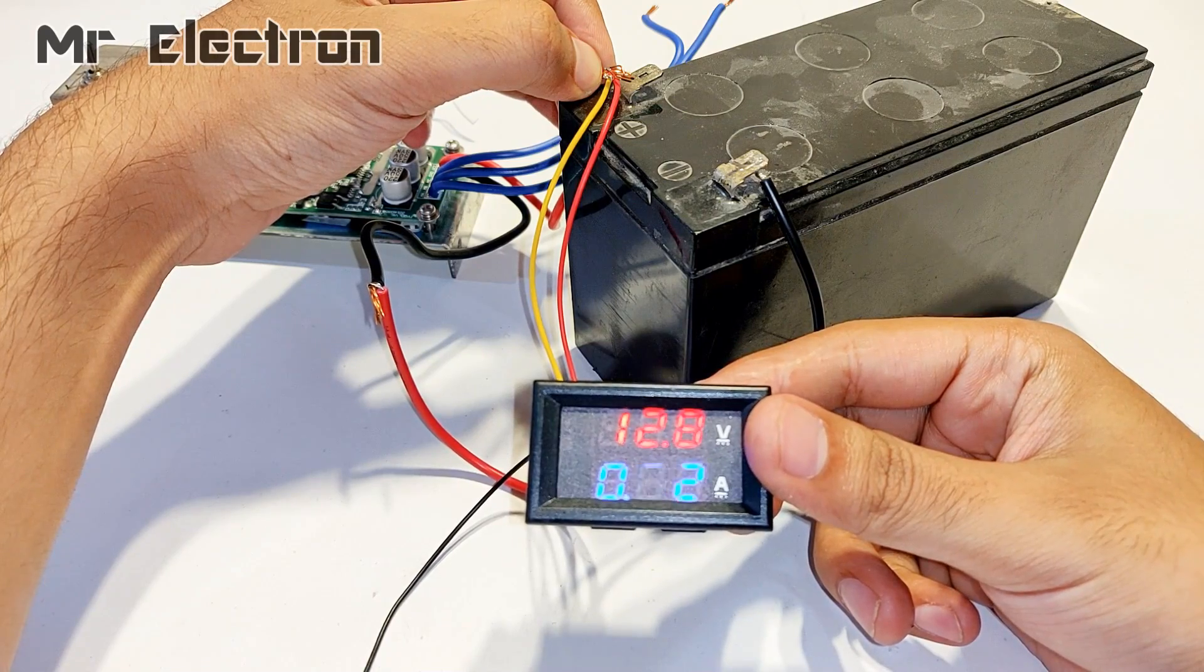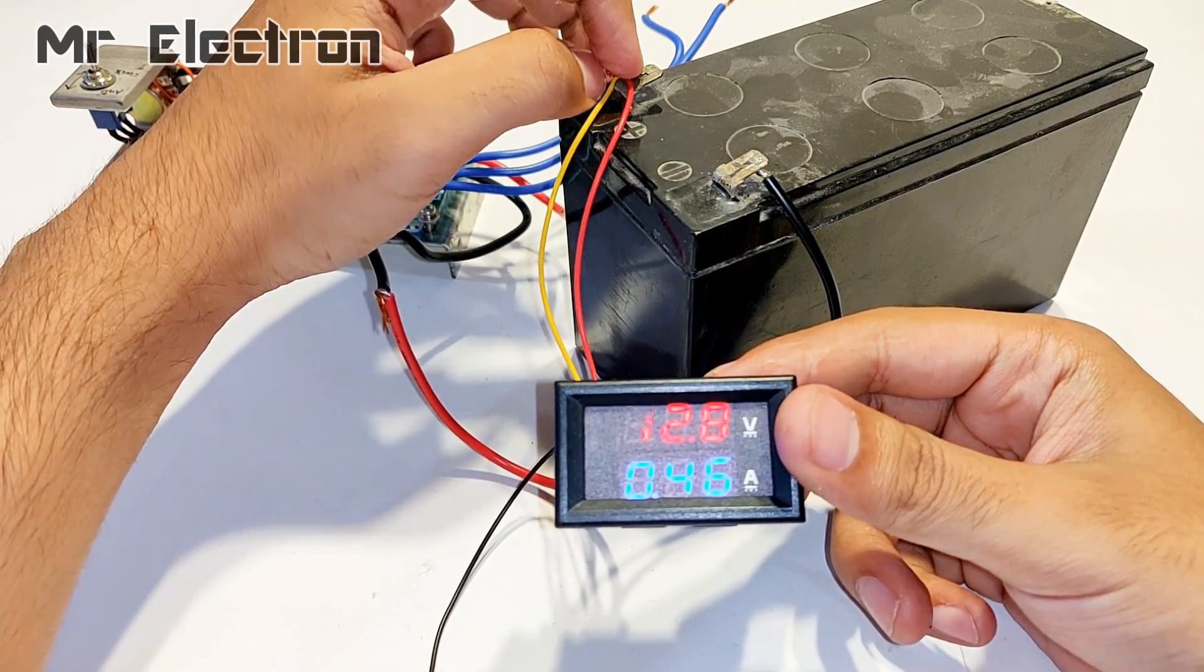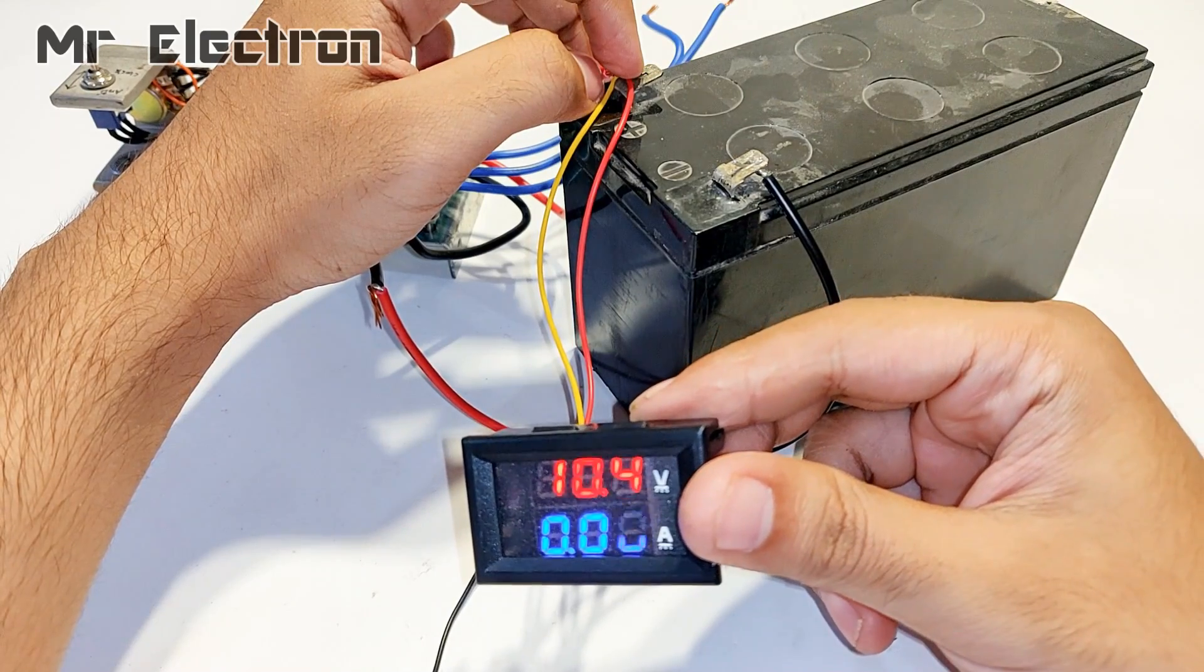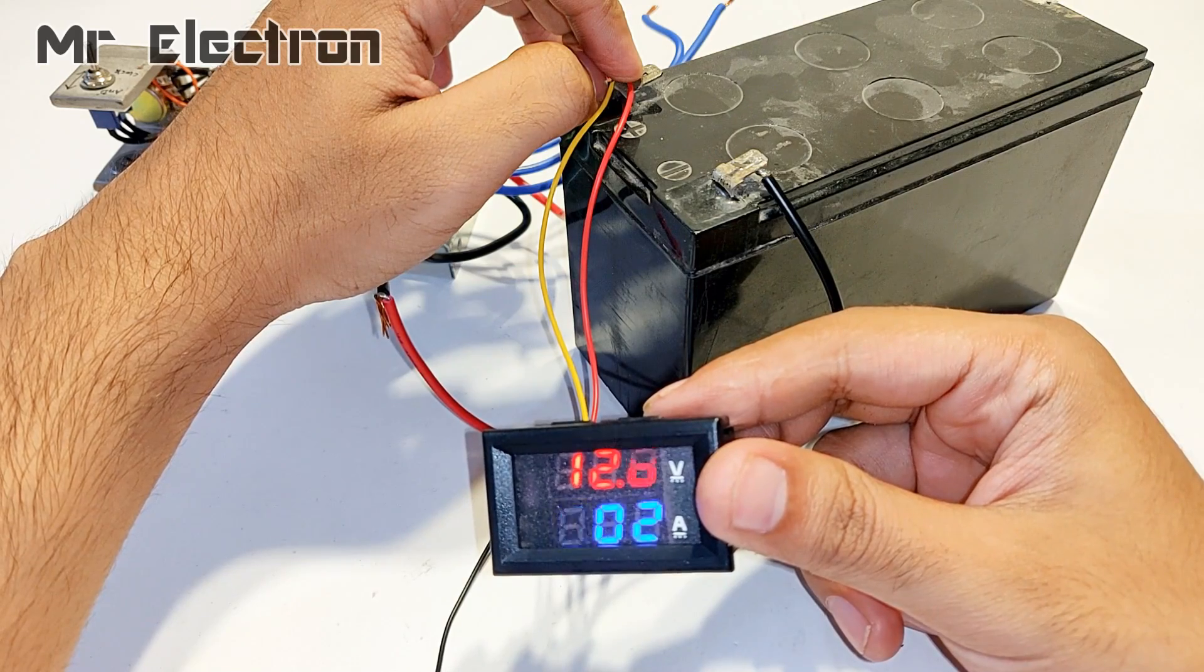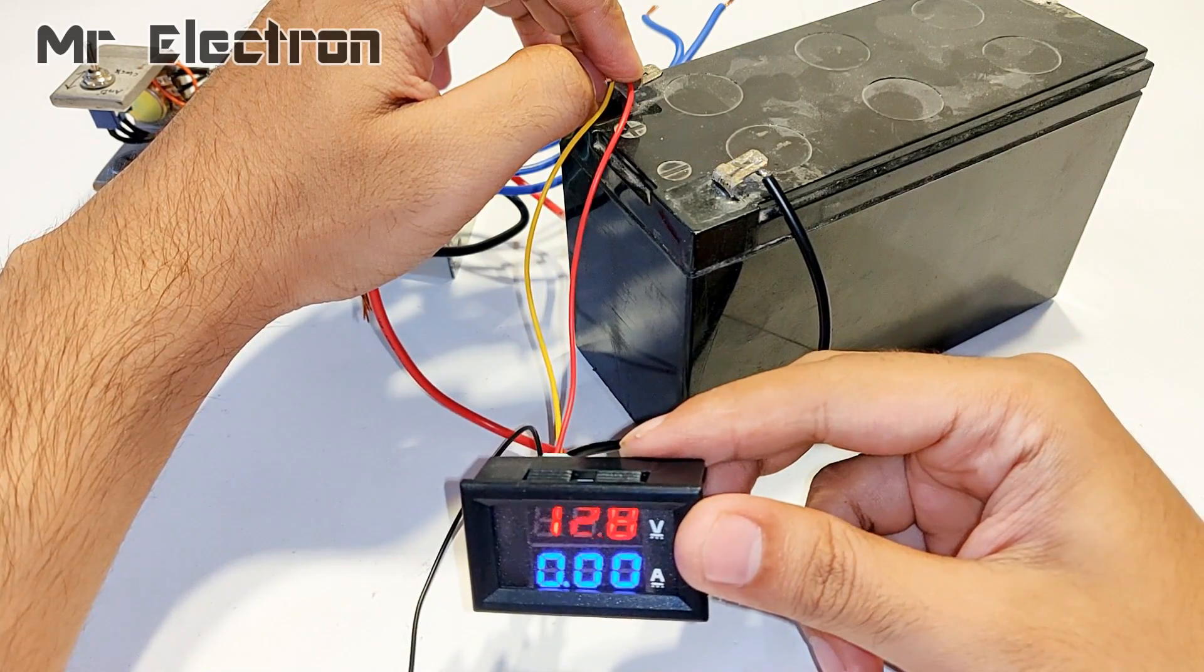Otherwise, if you want to power up this multimeter not with the same power source, then you will have to connect the thin black wire that has been left out and the red wire, the thin red wire, to an external power supply ranging from 4 volts to 30 volts.